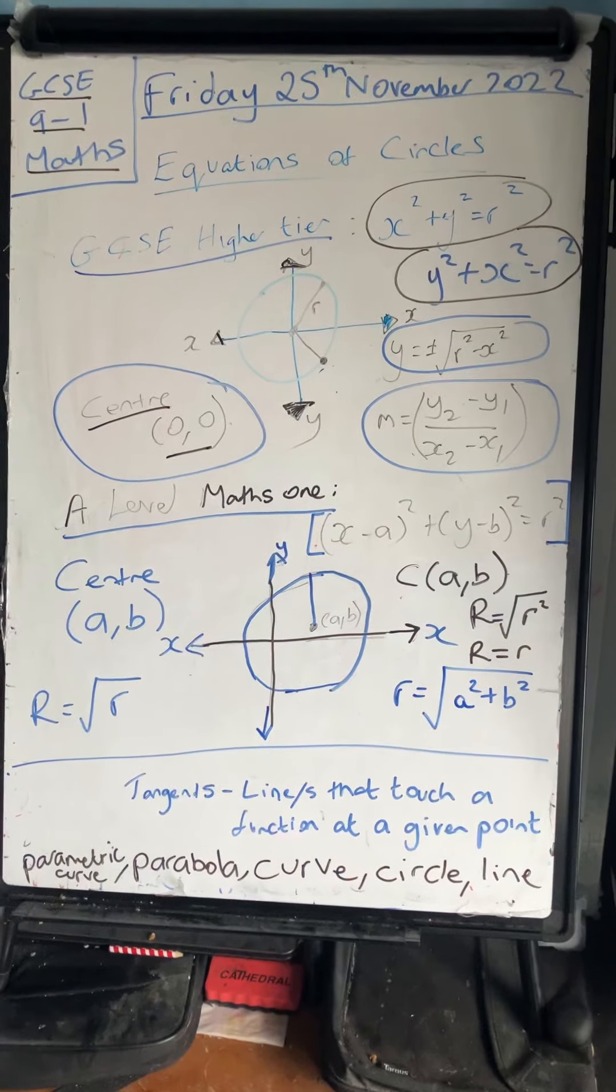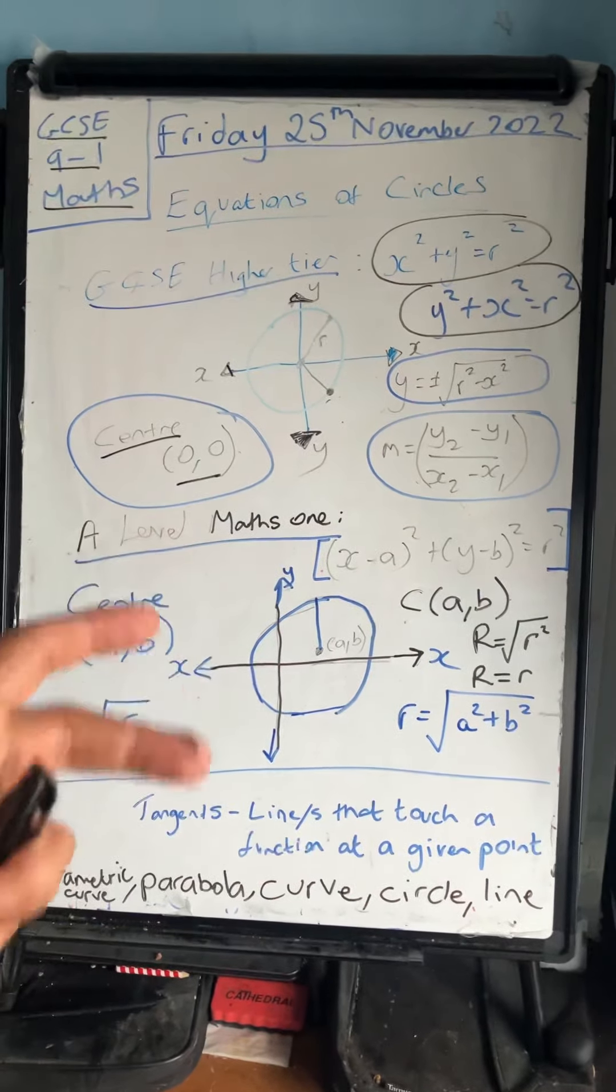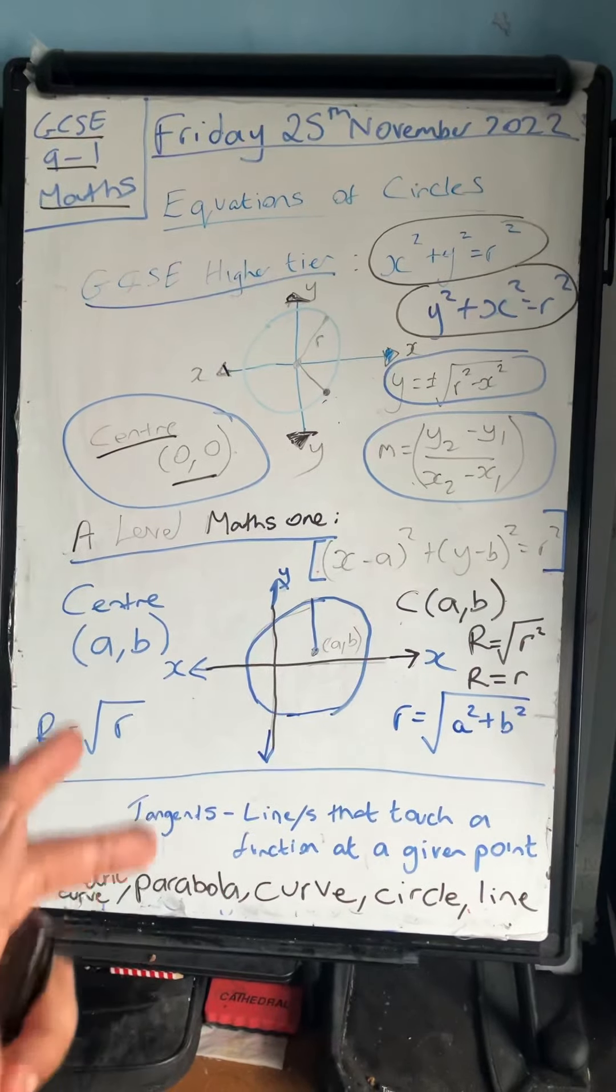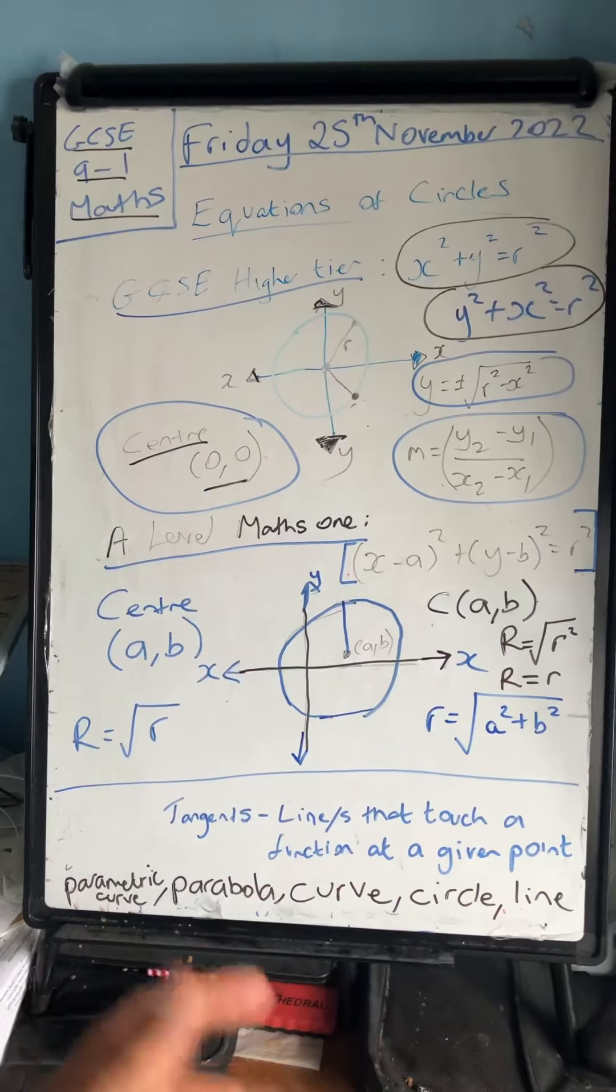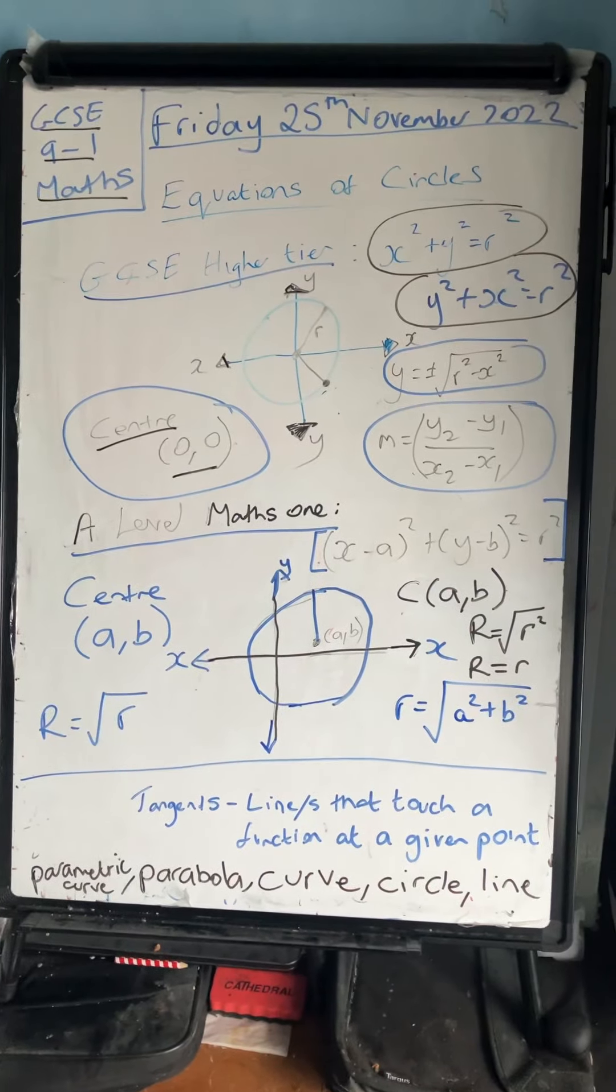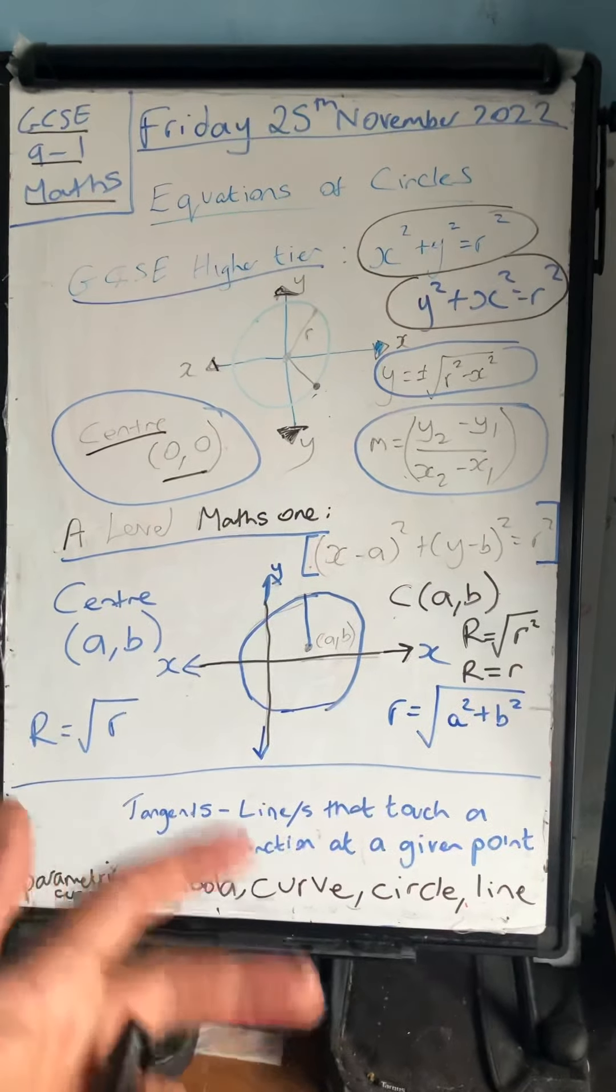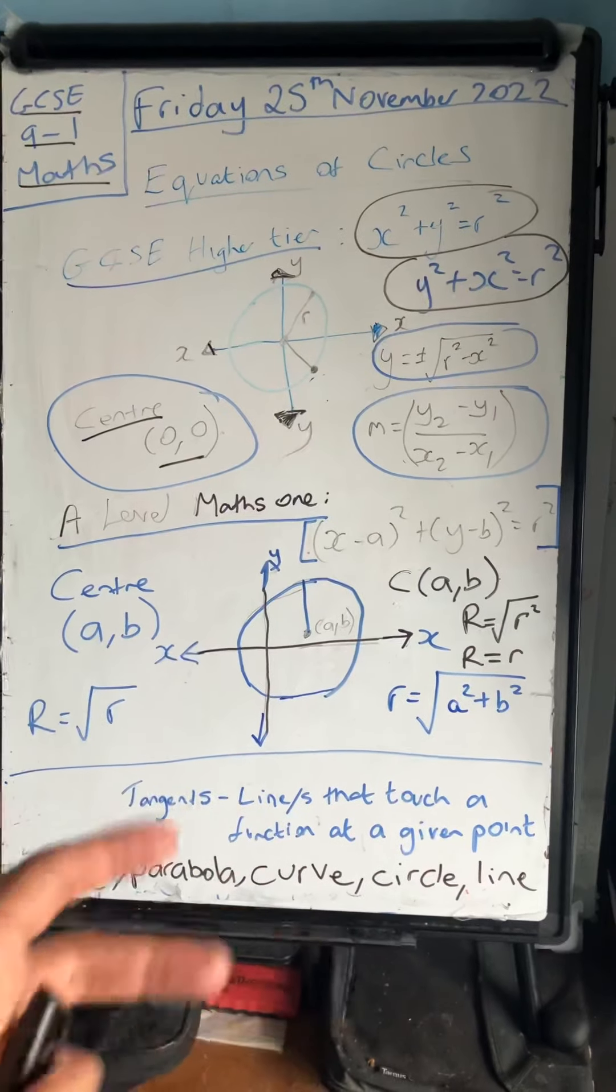We can't have a negative radius - a radius has to always be a positive number, whether it's a fraction, decimal, or integer. It is a positive number bigger than or equal to zero.